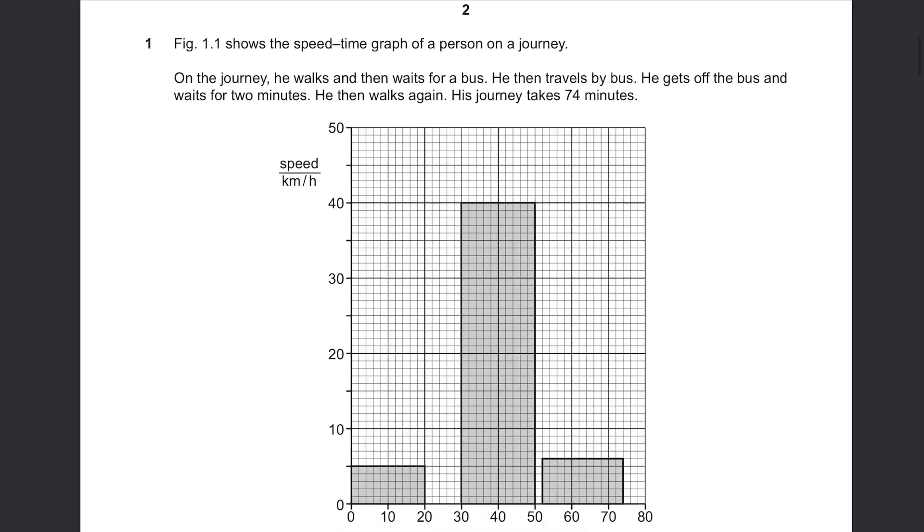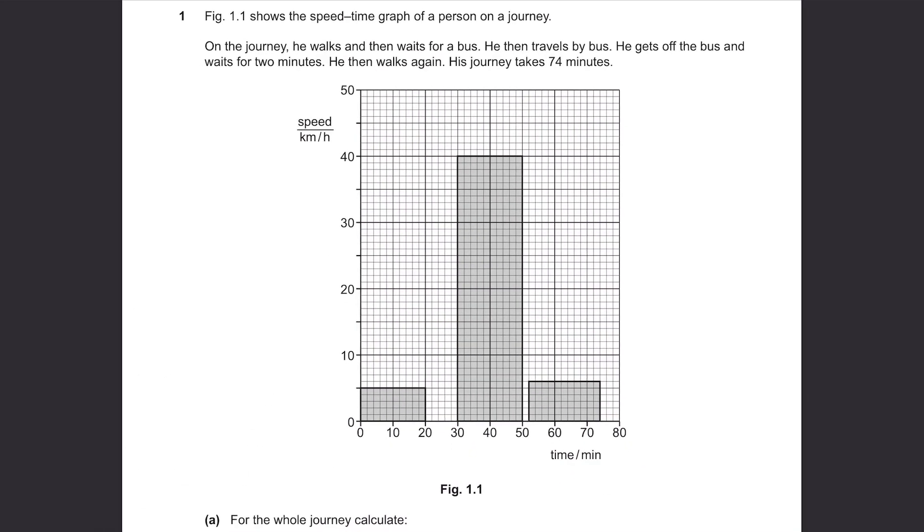Figure 1.1 shows the speed-time graph of a person on a journey. On the journey, he walks and then waits for a bus. He then travels by bus, gets off the bus and waits for 2 minutes, then walks again. His journey takes 74 minutes. This isn't a bar graph although it looks like one. These parts are just at zero speed.